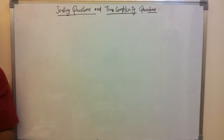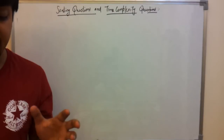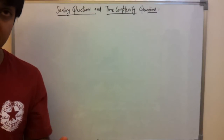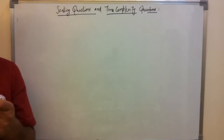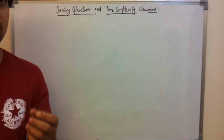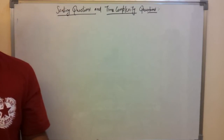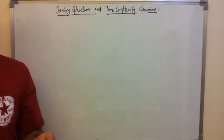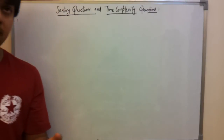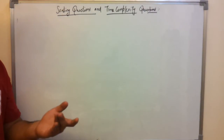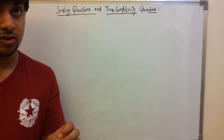If an array is almost sorted, which of the following sorting techniques will you use: insertion sort, merge sort, quick sort, selection sort? Many people answered in the last video that we will use insertion sort in this case.